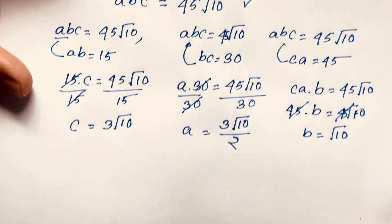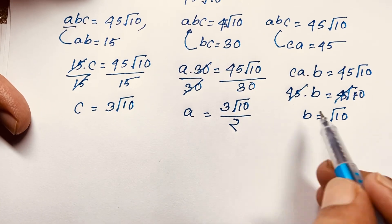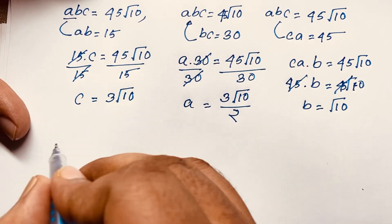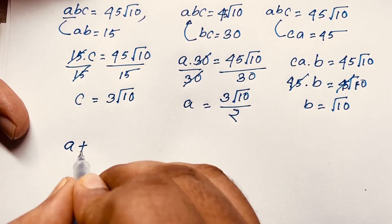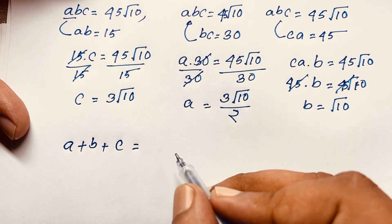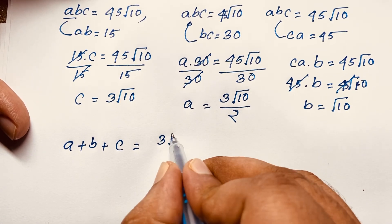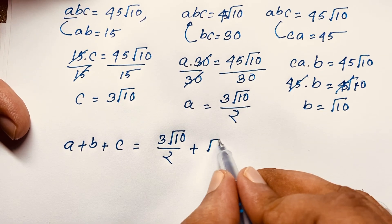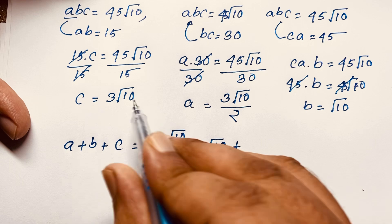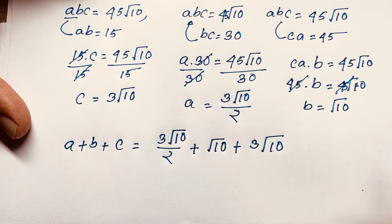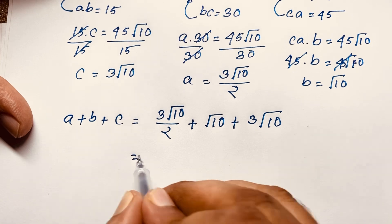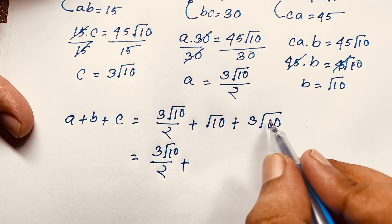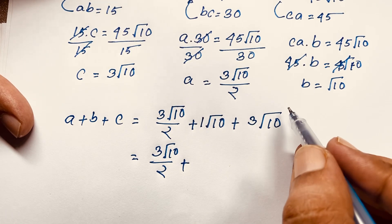We have found all three values: a = 3√10/2, b = √10, and c = 3√10. Our target is a + b + c, so we add these together: 3√10/2 + √10 + 3√10.